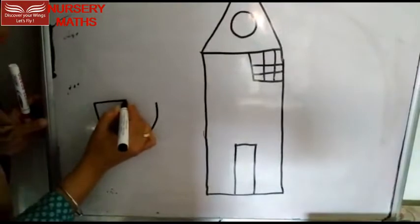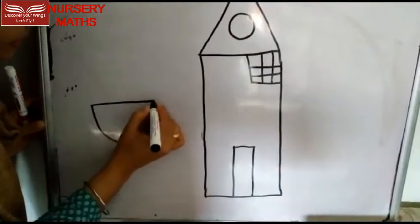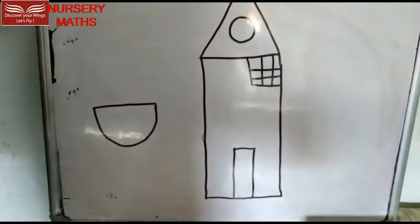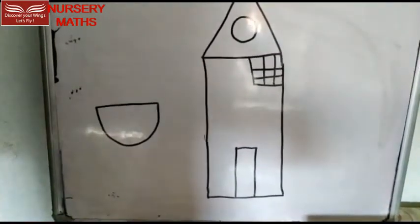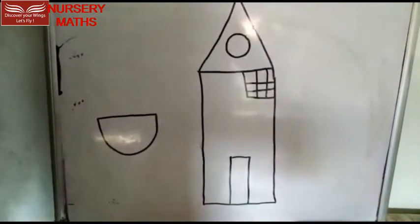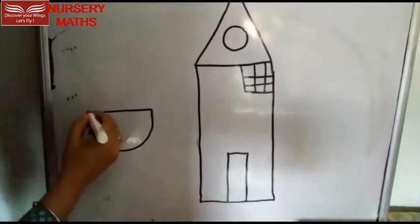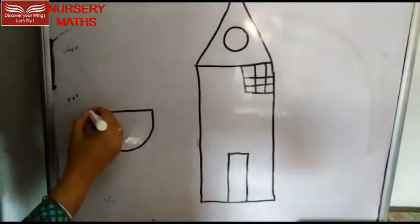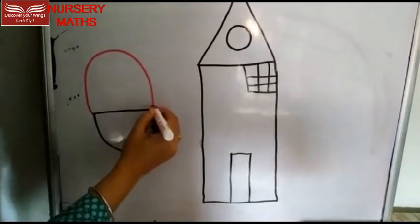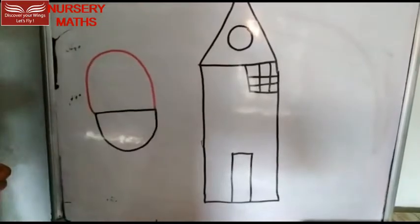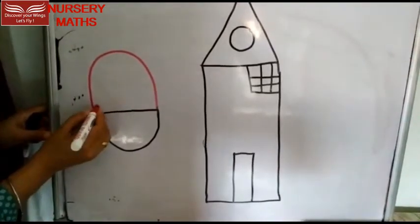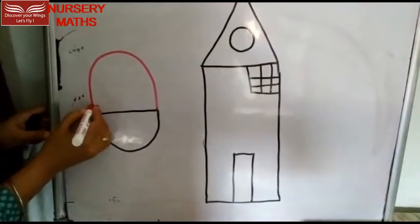This is a semicircle shape. What are we going to do with this? We are going to use this as a basket. Yes, we are going to use this as a basket!